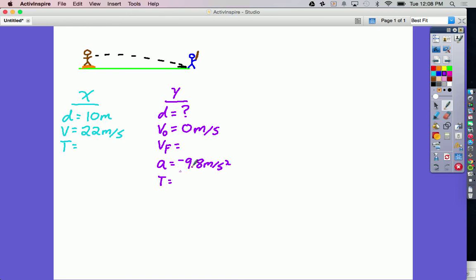So now we're looking for something in the y direction, but we don't have enough stuff to solve. So we're going to go over to the x direction and solve for time. Since once we know time in the x, that'll give us time in the y and will give us enough information to solve for the distance in the y, which is what we're really looking for.